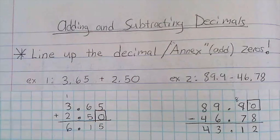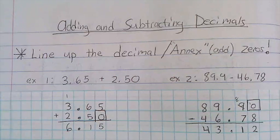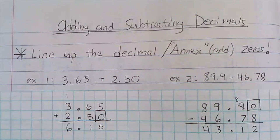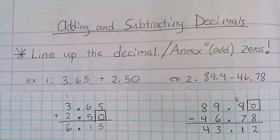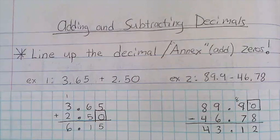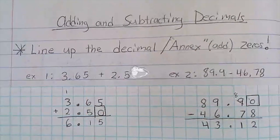Good morning, today we're going to be talking about how to add and subtract decimals. The first thing you need to do is line up the decimal, and then the second thing you need to do is annex or add zeros in to make sure that there's the same amount of place value. Then you'll add them right down or subtract them right down, and you always start from the right hand side.